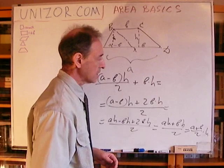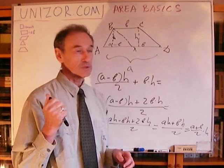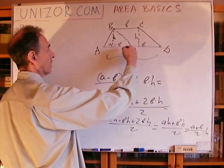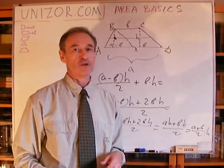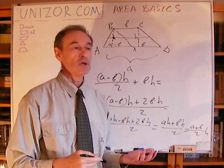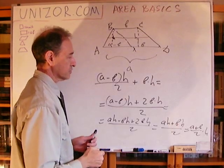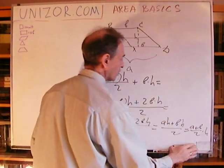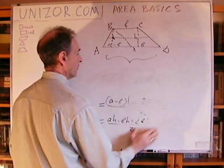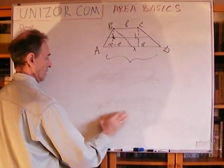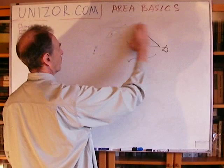Half the sum of the two bases multiplied by the altitude — and by the way, I hope you remember that half the sum of the two bases is actually the length of the median of the trapezoid. So you can always say that the area of the trapezoid equals the result of multiplication of the median line times the altitude. This can actually be proven directly — geometrically, not algebraically — using the following logic.